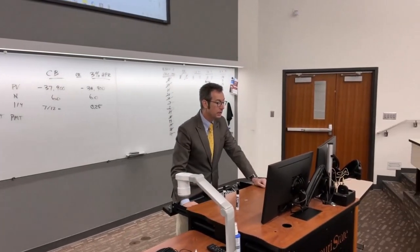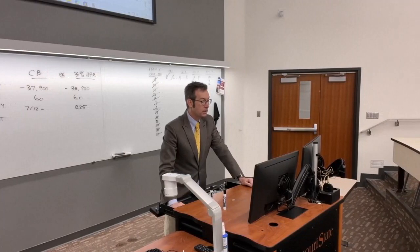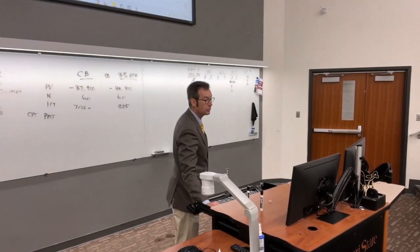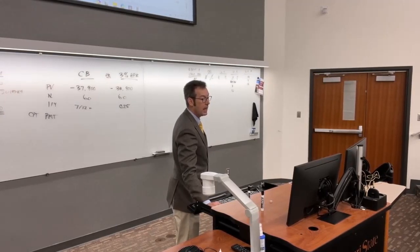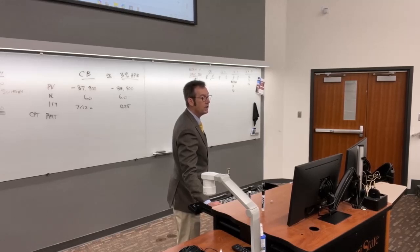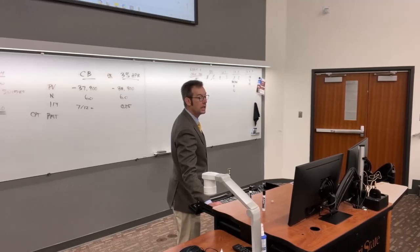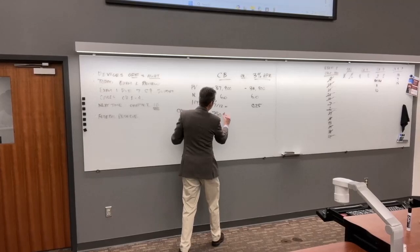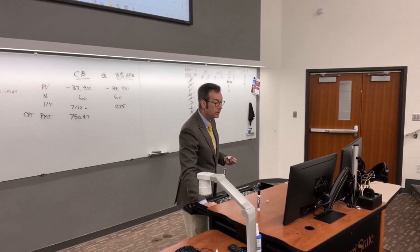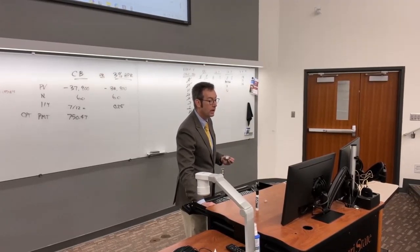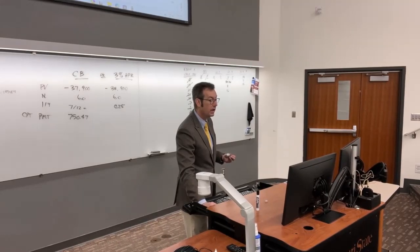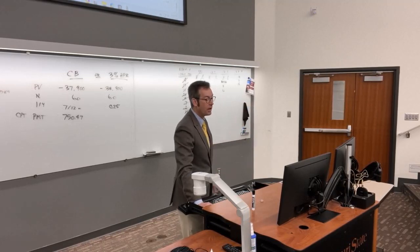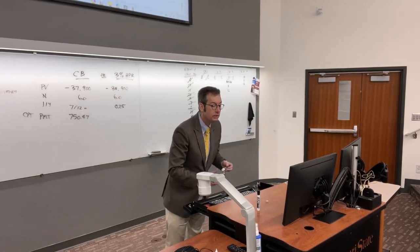Clear calculator. For the 7% deal: enter PV = −37,900; N = 60; I/Y = 7 ÷ 12 (hit equals first); compute PMT. I'm getting $750.47.